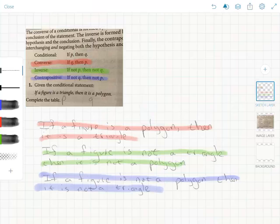So now that we've established the difference between inverse, converse, and contrapositive, we need to talk about the relative truth value.